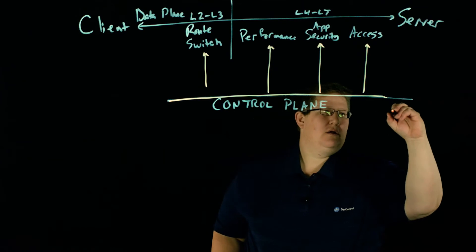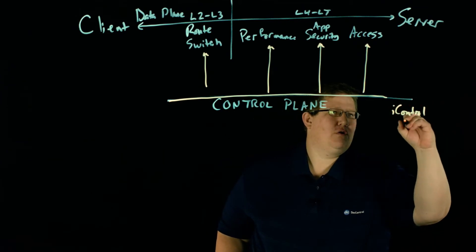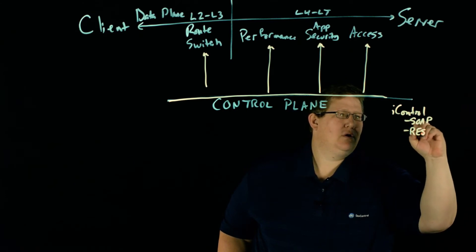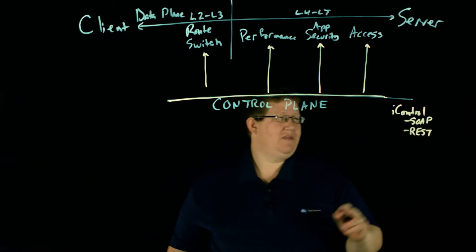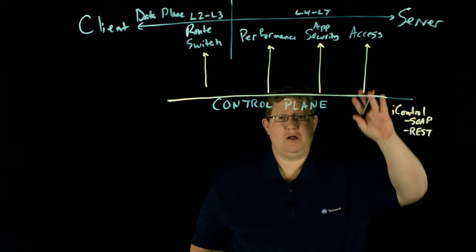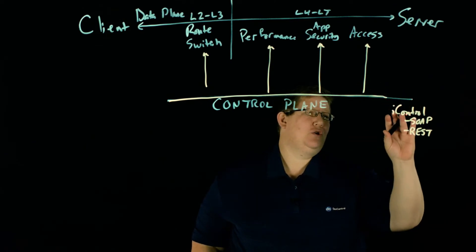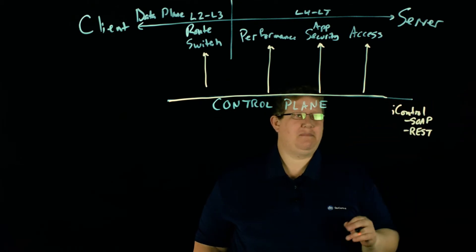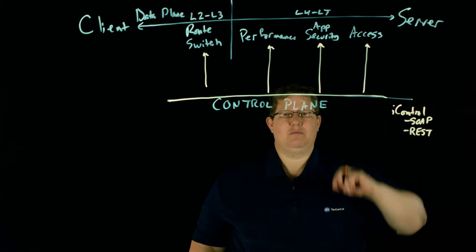And so at the control plane, you have technologies like iControl, whether it's SOAP or REST. You can run iControl on box, but typically you run iControl on a different server and it interacts with BIG-IP, and it allows you to do much of the same thing.